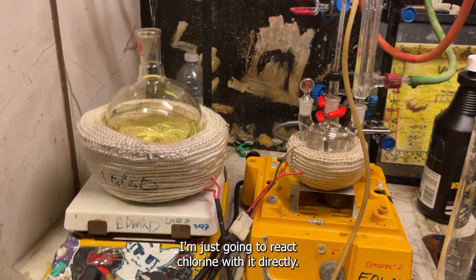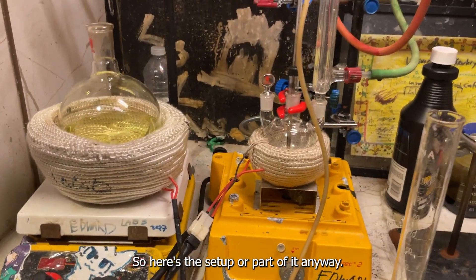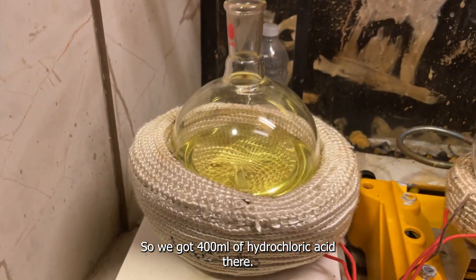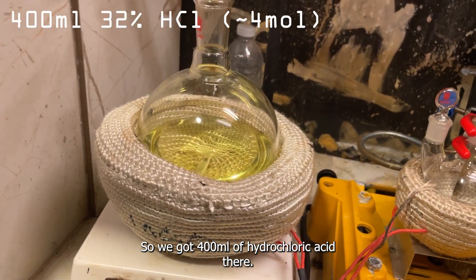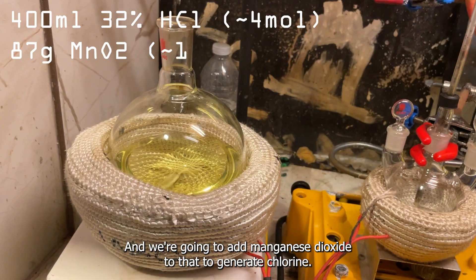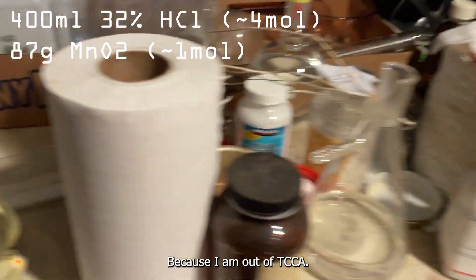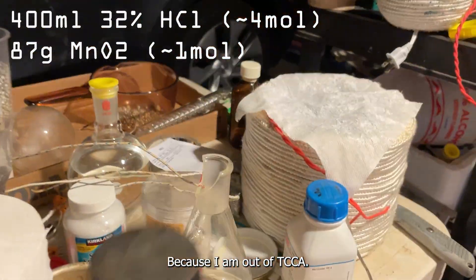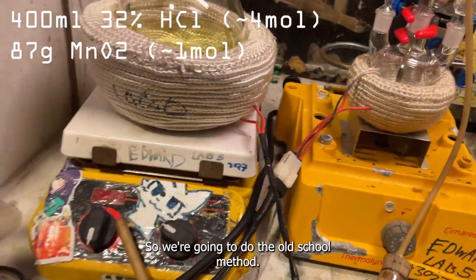So here's the setup, well part of it anyway. We've got 400 milliliters of hydrochloric acid in there. And we're going to add manganese oxide to that to generate chlorine because I am out of TCCA. So we're going to do the old school method.